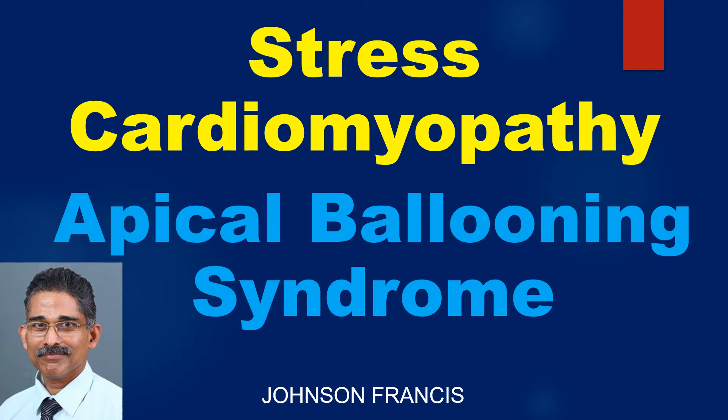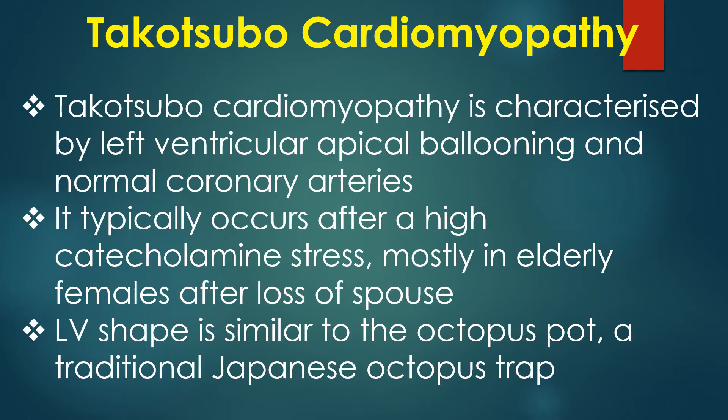This is a discussion on Broken Heart Syndrome or Takotsubo Cardiomyopathy. Takotsubo Cardiomyopathy is characterized by left ventricular apical ballooning and normal coronary arteries. It typically occurs after high catecholamine stress, mostly in elderly females after loss of a spouse. The LV shape is similar to the octopus pot, a traditional Japanese octopus trap.